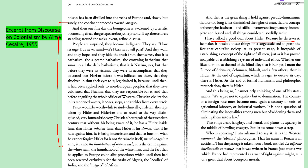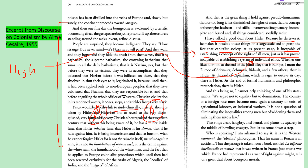He writes: 'I've talked a good deal about Hitler because he deserves it. He makes it possible to say things on a large scale and to grasp the fact that capitalist society at its present stage is incapable of establishing a concept of the rights of all men, just as it has proved incapable of establishing a system of individual ethics.' Adolf Hitler and the Nazi party considered themselves an example of high civilization, and he's questioning that logic. He argues that what truly makes high civilization is a concept of the rights of all men and individual ethics — not military takeover of Civilization B.